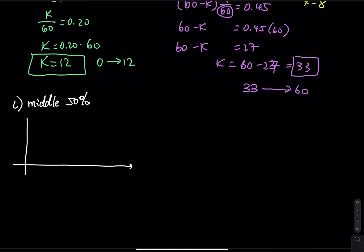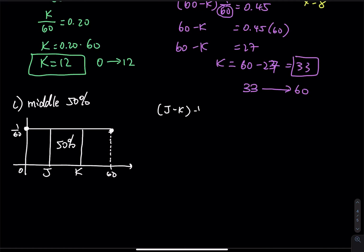Let me draw a picture from 0 to 60 with the PDF height. Middle 50 percent means you cut exactly 50 percent in the middle, which gives you two unknowns J and K. You might think: set up J minus K times 1/60 equal to 50 percent and solve for J and K. But this question is not solvable because we cannot solve one equation with two unknowns — it doesn't matter how many math classes you've taken, solving one equation with two unknowns is impossible.